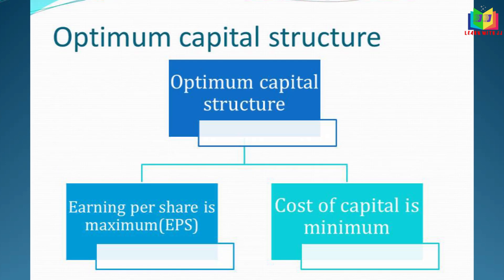Now we will see about the optimum capital structure. The optimum capital structure is the capital structure where the firm has a combination of equity and debt which gives maximum wealth to the shareholders. In that combination of debt and equity mix, the earnings per share will be the highest and the cost of capital will be the lowest. In simple words, optimum capital structure gives the maximum benefit to the shareholder — the earnings for the investment will be higher.